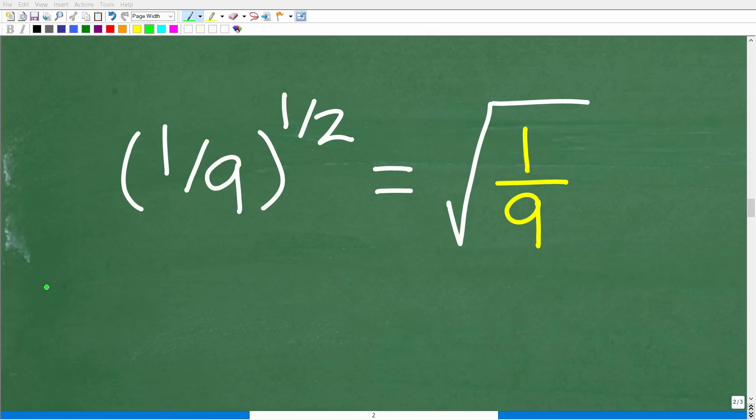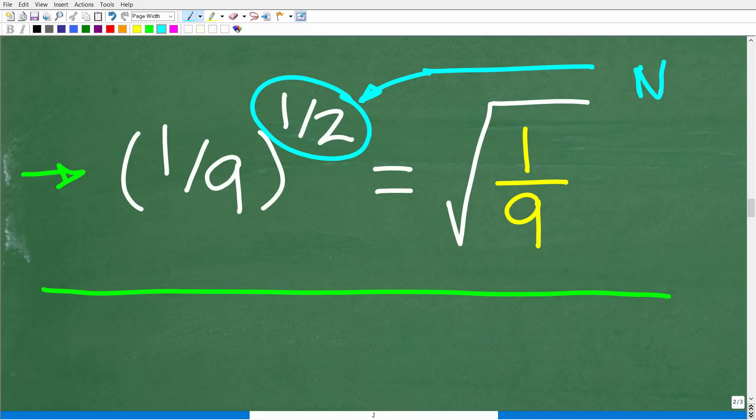Now before I finish up this problem, let's do a quick review. So we first had 1/9 to the 0.5 power, and then we wrote that 0.5 as the fraction 1/2. Now 1/2 is a rational number. Now, I did say that any number that you can express as a fraction is a rational number, but I want to be more precise with that definition. So let's take a look at what a rational number is.